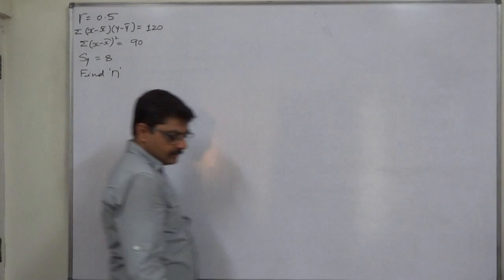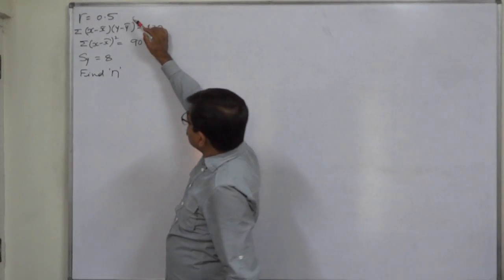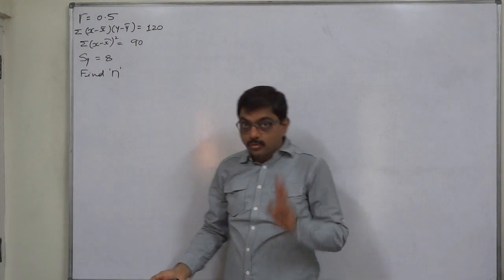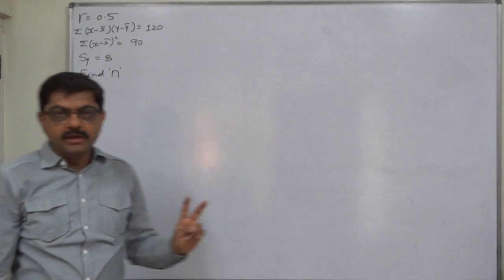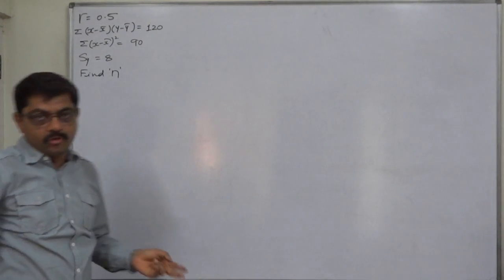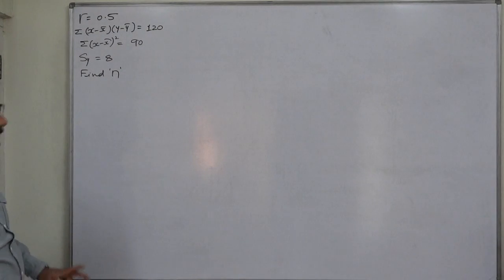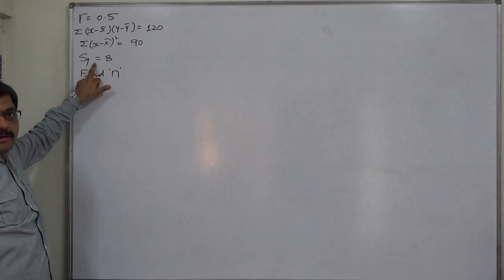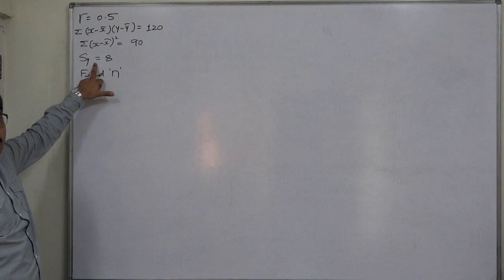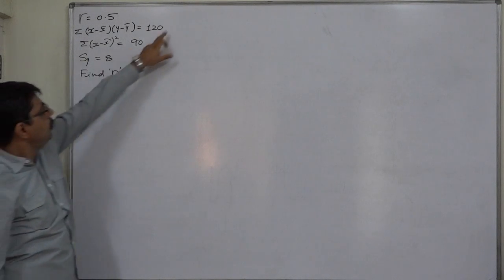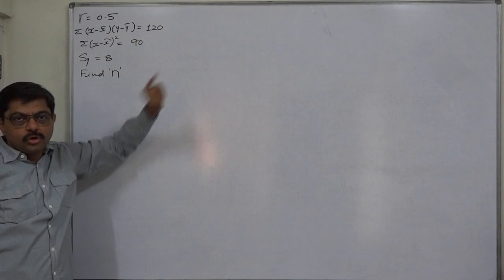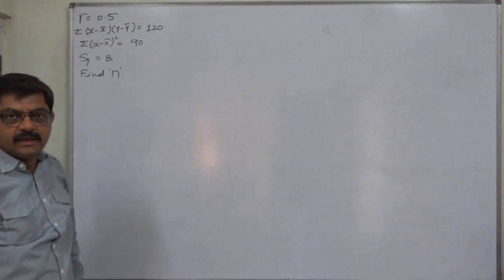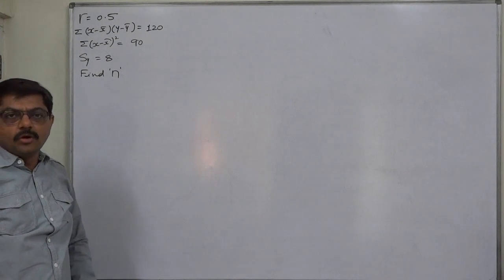Coefficient of correlation and standard deviation are two things which can be found through their own formulas. But we know that in the formula for calculating standard deviation of y, there is no role of these two parameters. So if we write the formula of standard deviation of y, it will not be of any use.